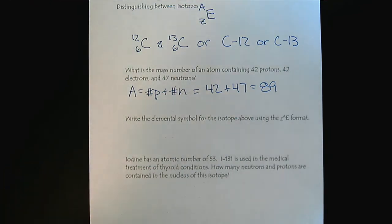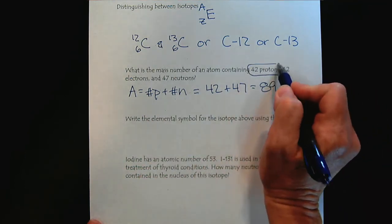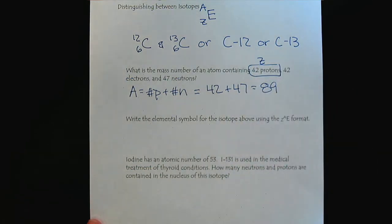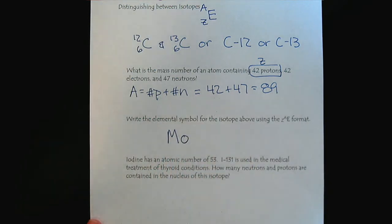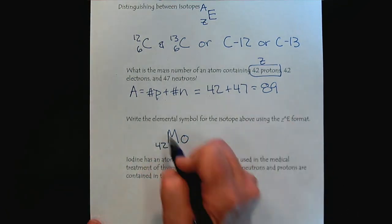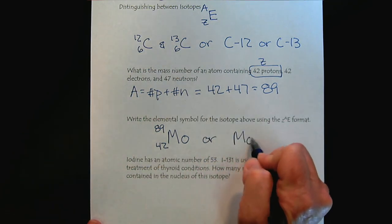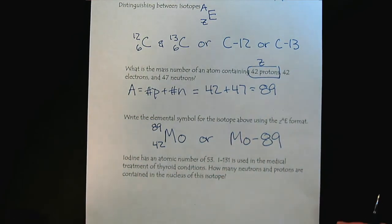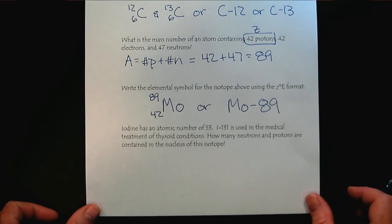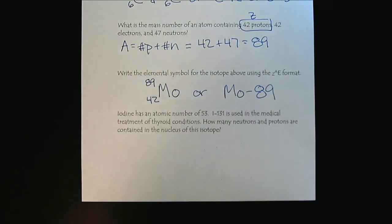Now, if we're asked to write the elemental symbol for this isotope using our format, the requested format here, we would look at the number of protons. We would look to our periodic table, and we would find the atomic number Z. And if you look on your periodic table, you will see that that is the element molybdenum. And then we will put the atomic number in the lower left corner, 42, and then our mass number up top, 89. And then the other format would simply be molybdenum-89. So it's good to be able to recognize both formats. And recognize that they're not always going to be important. Isotopes are not always important to the conversation, but when they are, you want to be able to understand what's being shared with you.